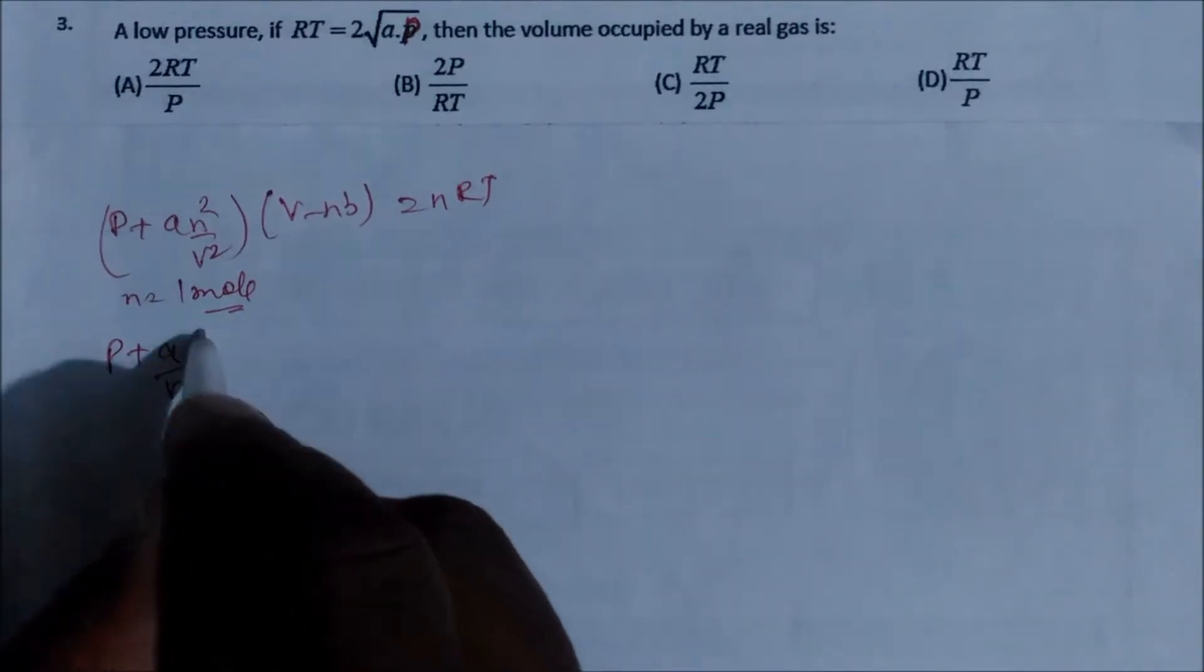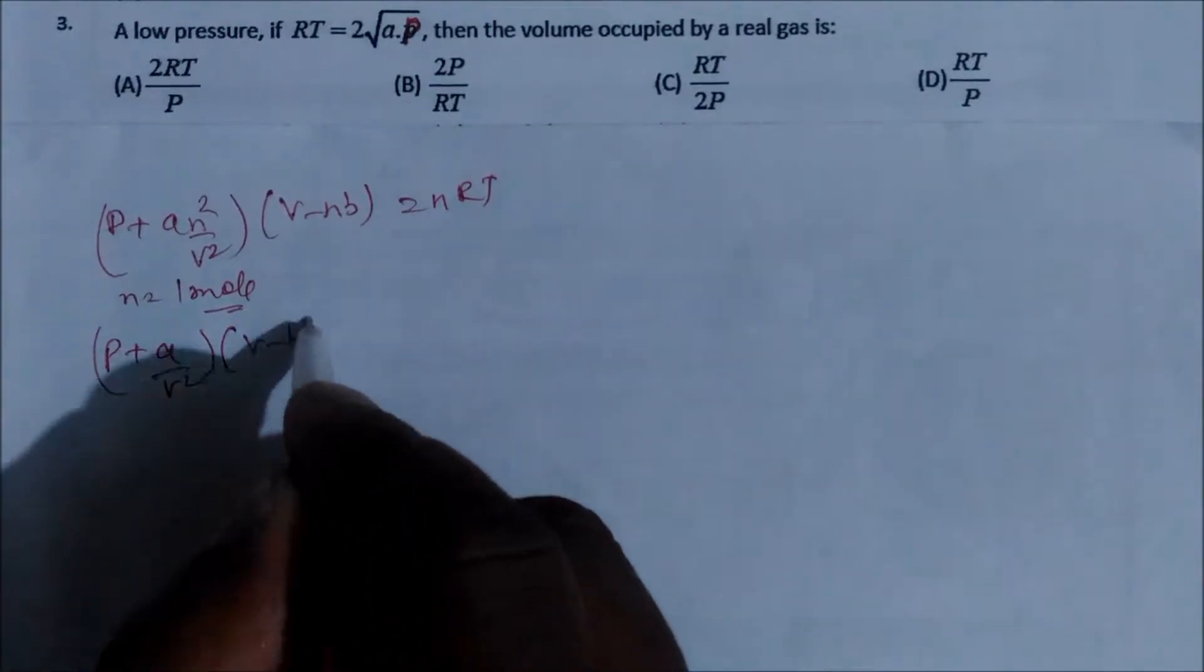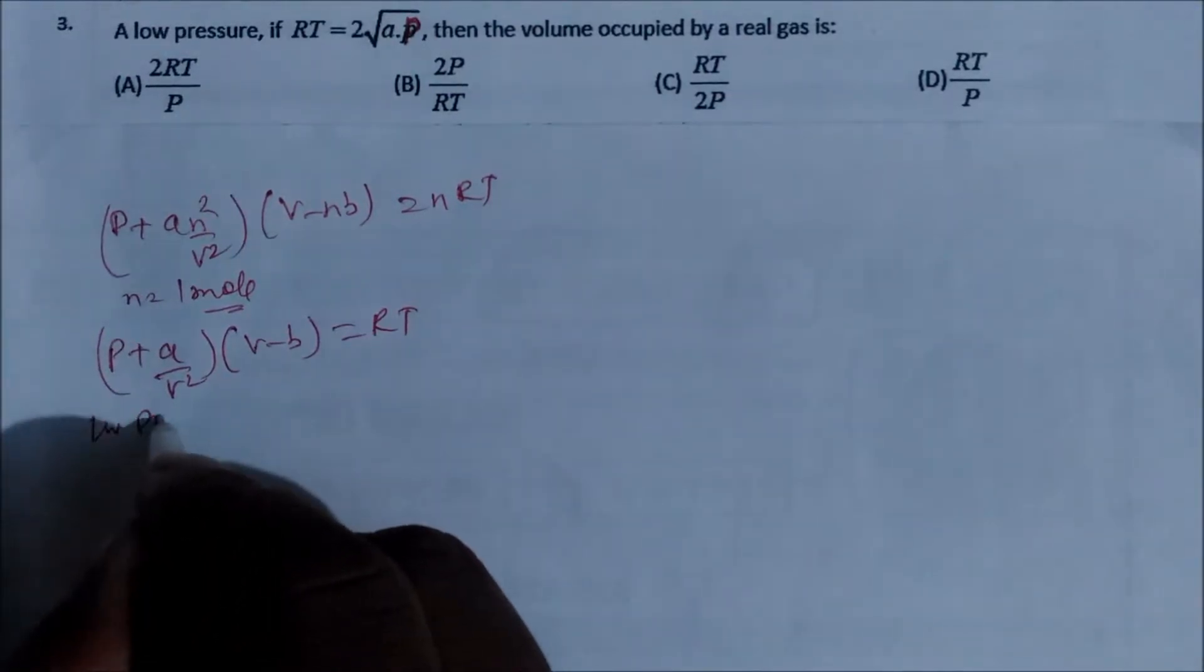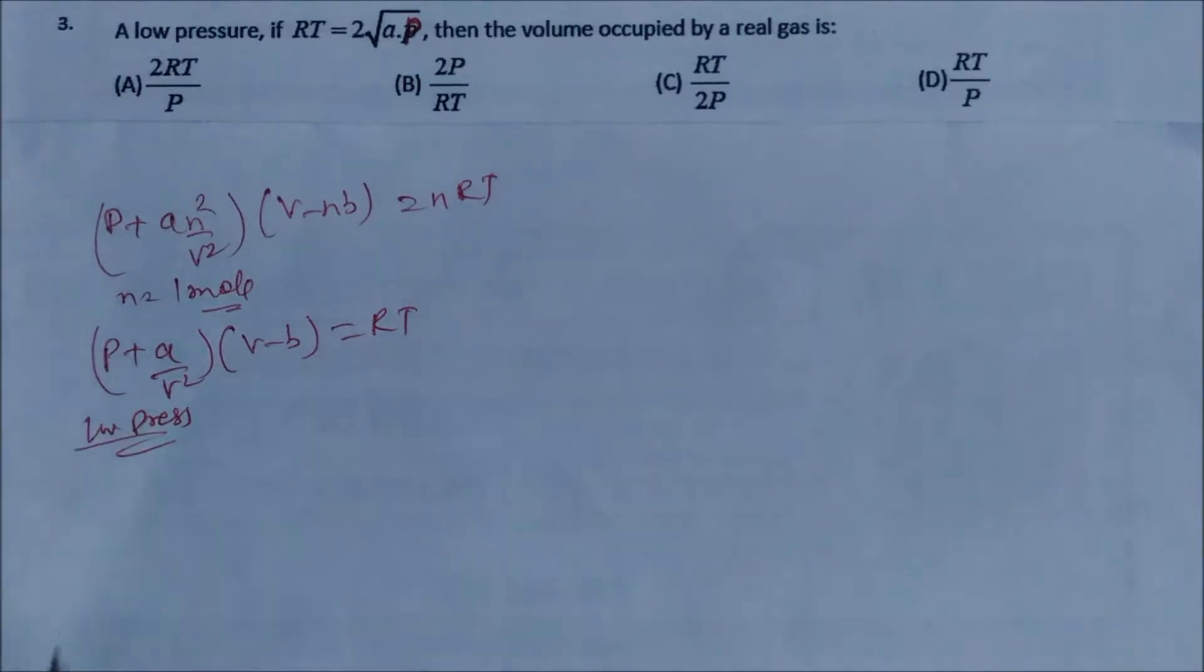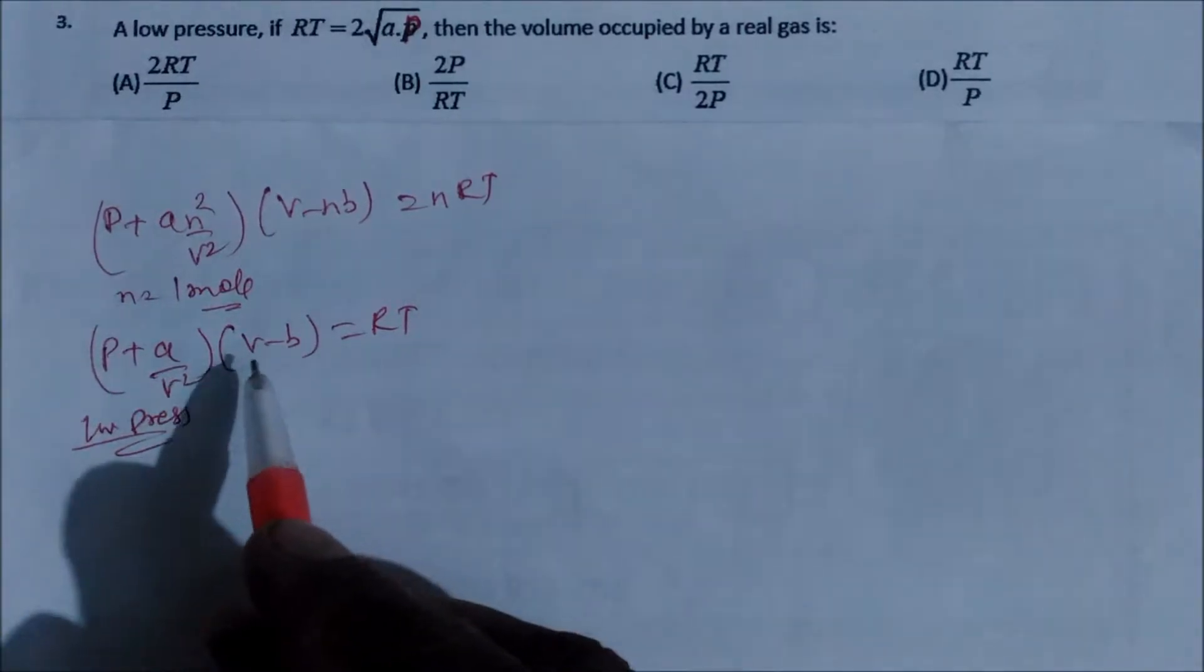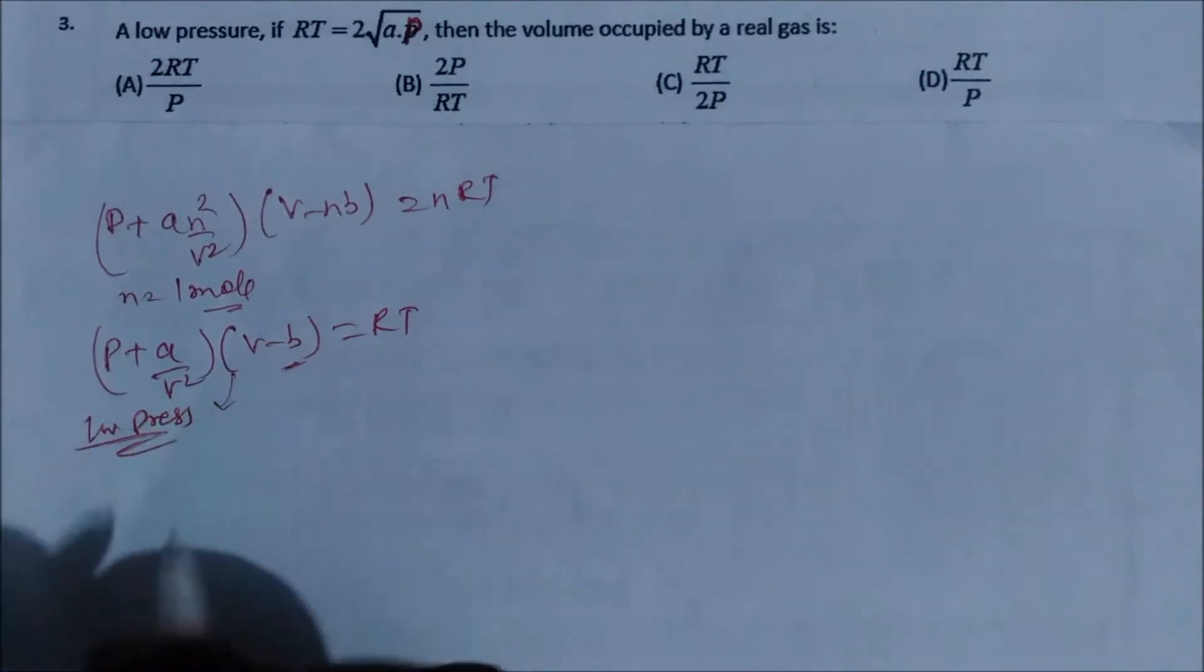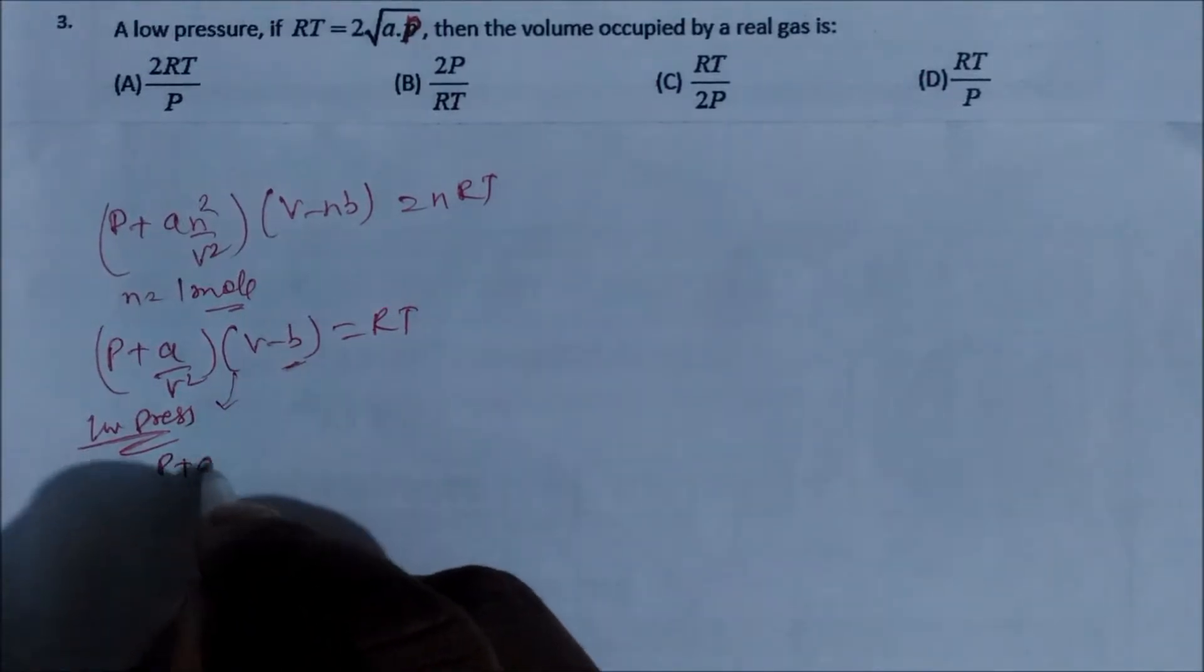By V square into V minus b is equal to RT. Now condition is low pressure. So if you take low pressure, in that case what happens? So gas will acquire the maximum volumes. If the gas is maximum volume, in that case b is negligible. So this is again rearranged into P plus a by V square, multiplied by V, equal to RT.